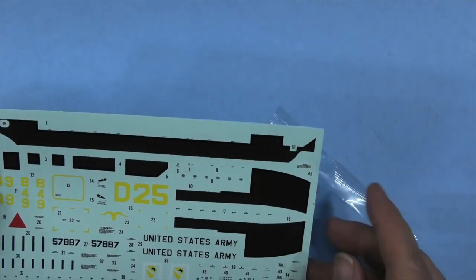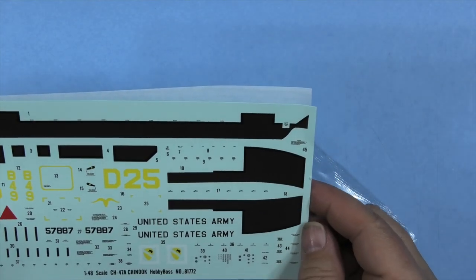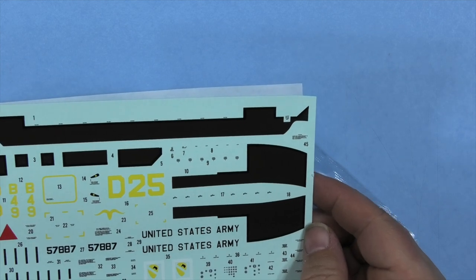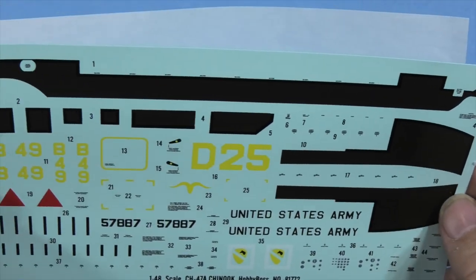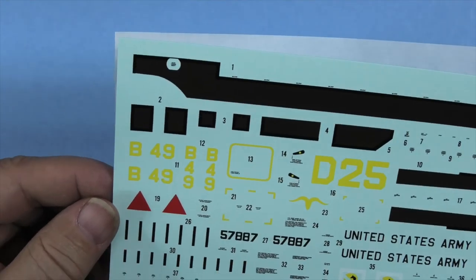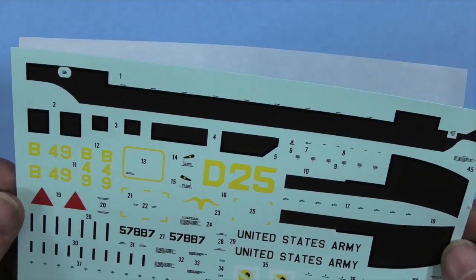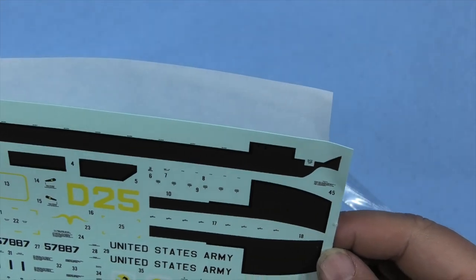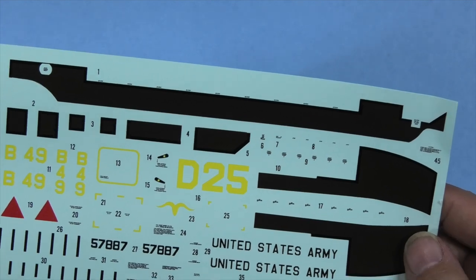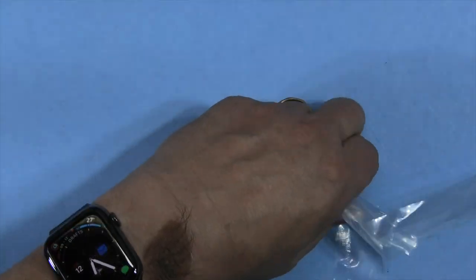These are typical Hobby Boss decals. I do not see any instrument panel decals, I guess they're over there, instrument panel decals, walkways, and your various markings. United States Army, stencils, a few other things. And that's going to lead us right into the instructions. I'm going to put the decals back in here.